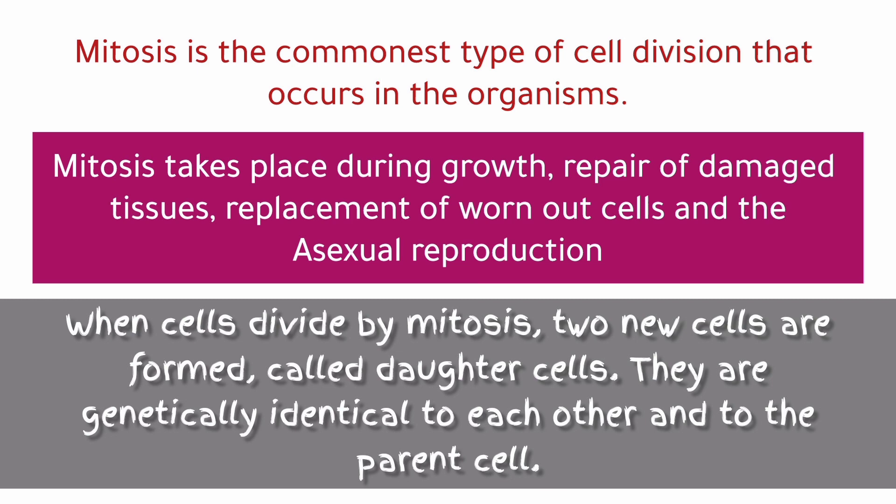Mitosis is the commonest type of cell division that occurs in organisms. Mitosis takes place during growth, repair of damaged tissues, replacement of worn-out cells, and asexual reproduction. When cells divide by mitosis, two new cells are formed called daughter cells. They are genetically identical to each other and to the parent cell.